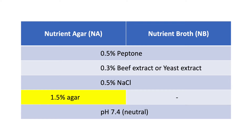0.5% sodium chloride is included to regulate the osmotic equilibrium of the media, and 1.5% agar serves as the solidifying agent for NA. The pH of NA or NB can be adjusted to 7.4 or neutral pH. NA is commonly used for bacterial isolation, enumeration, and storage.